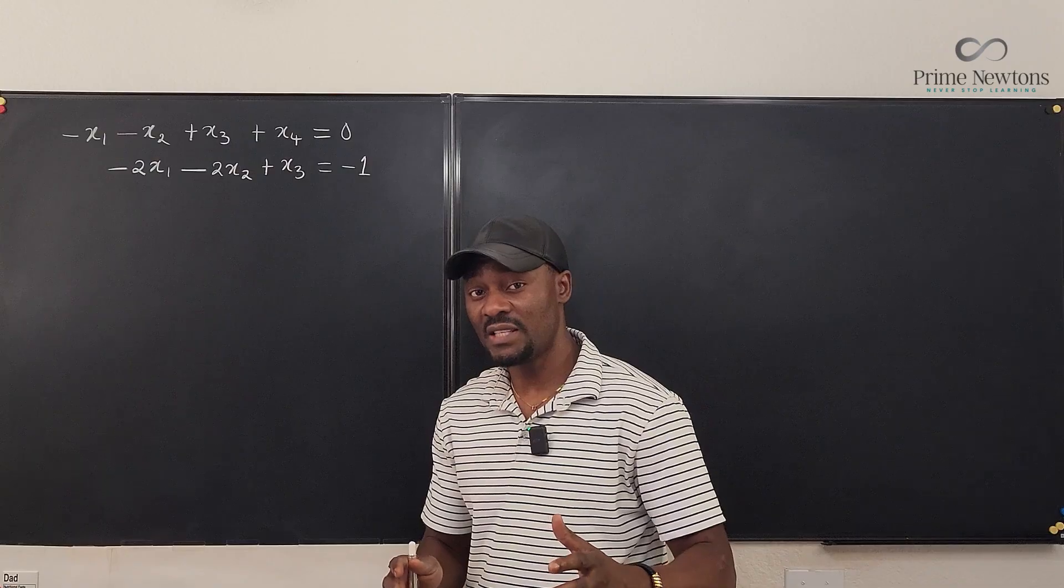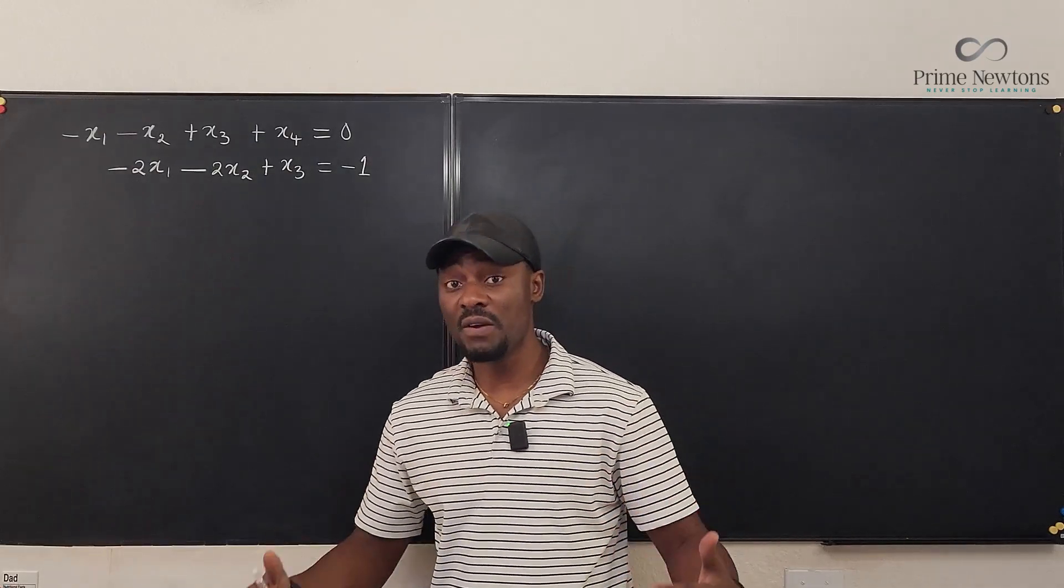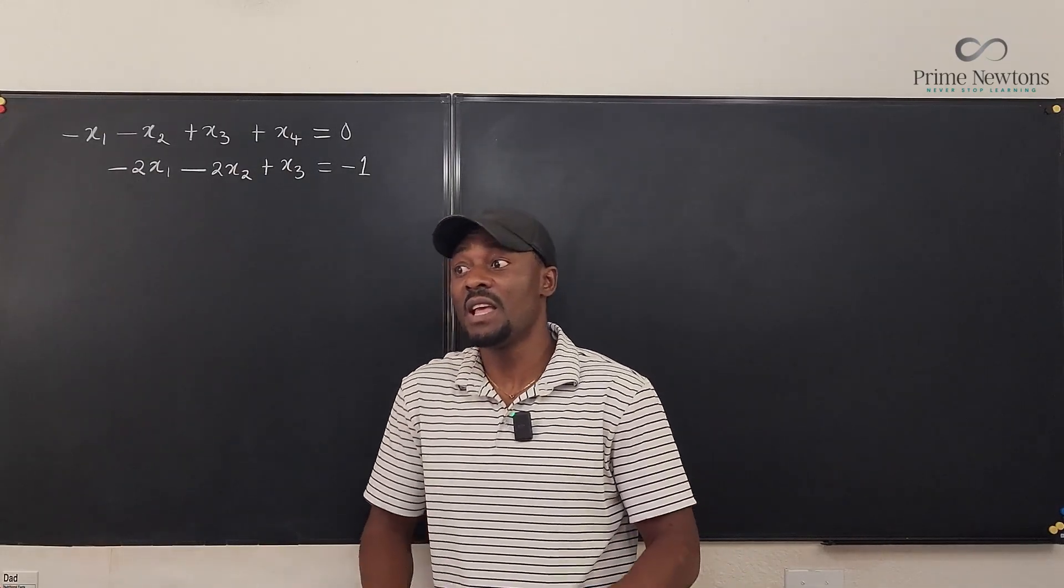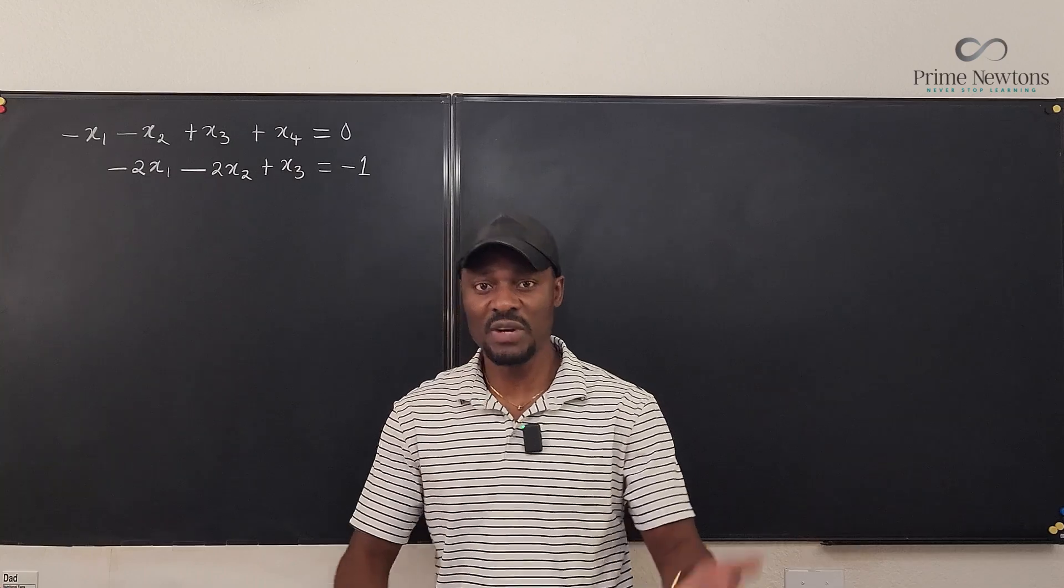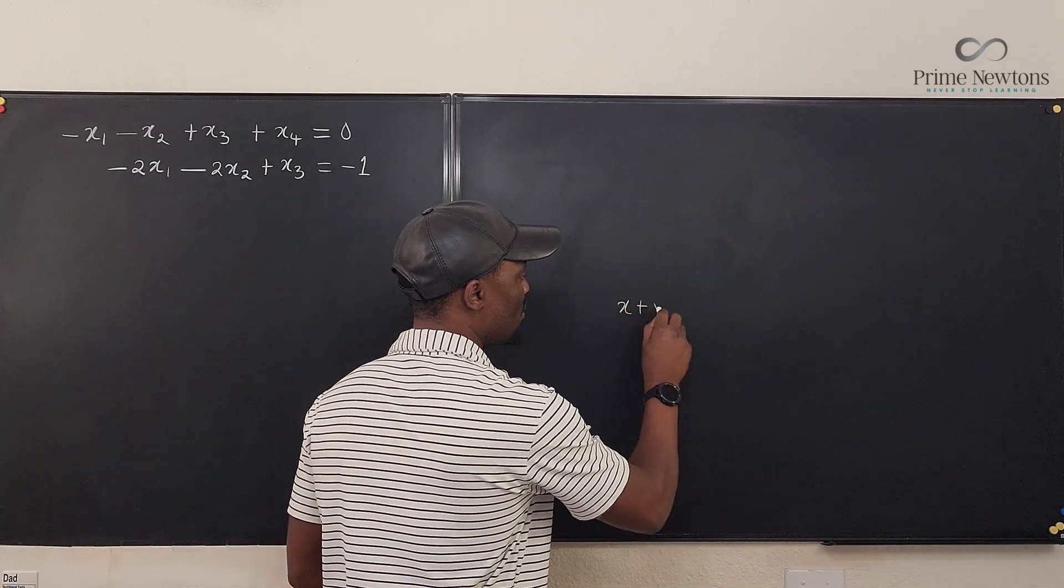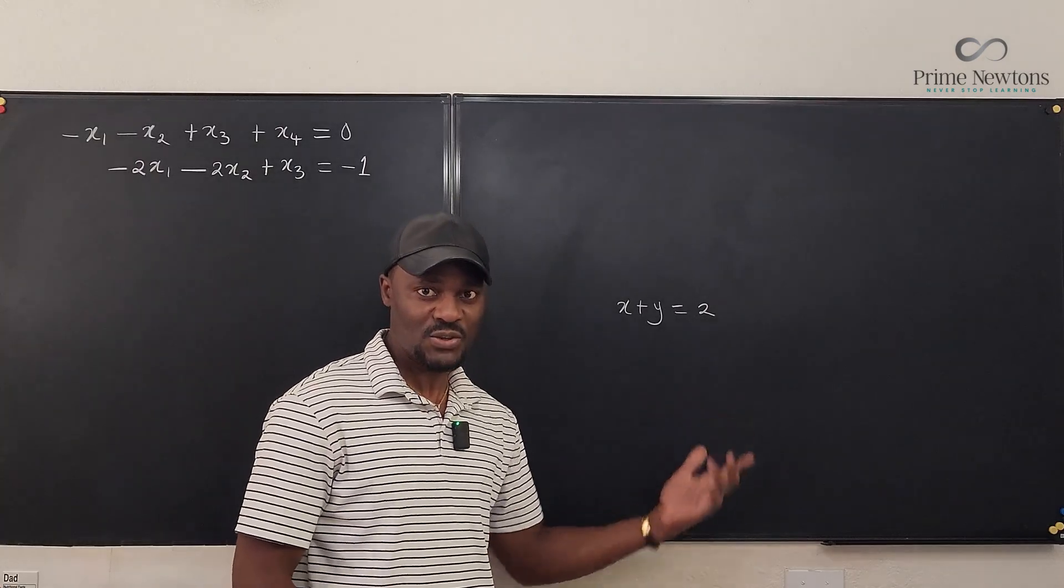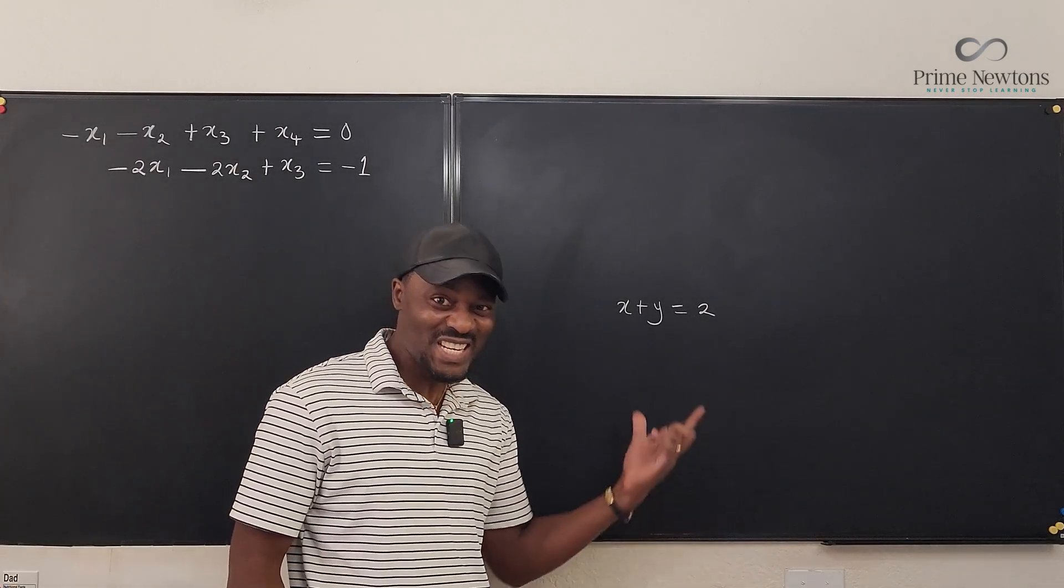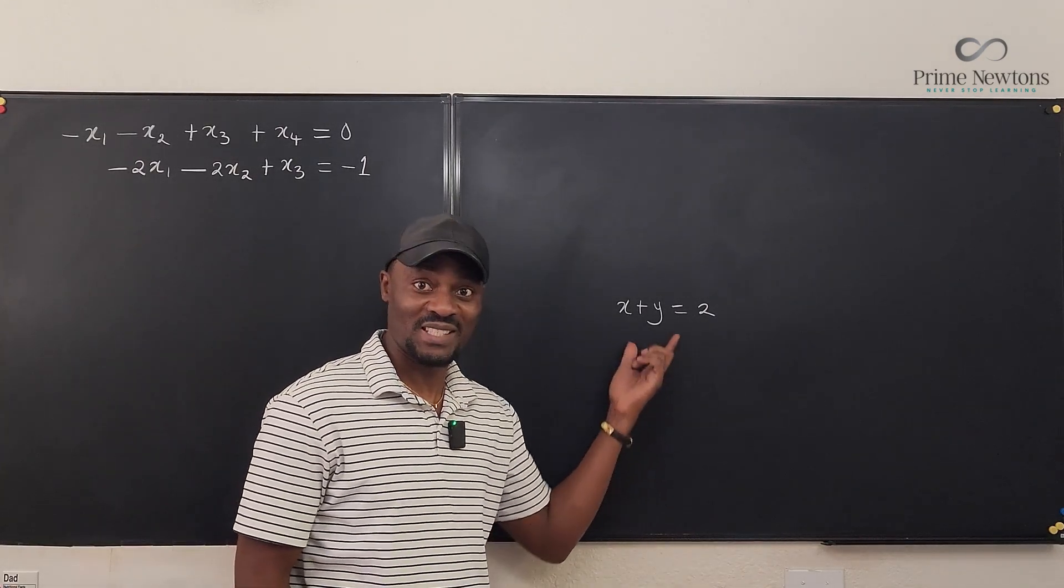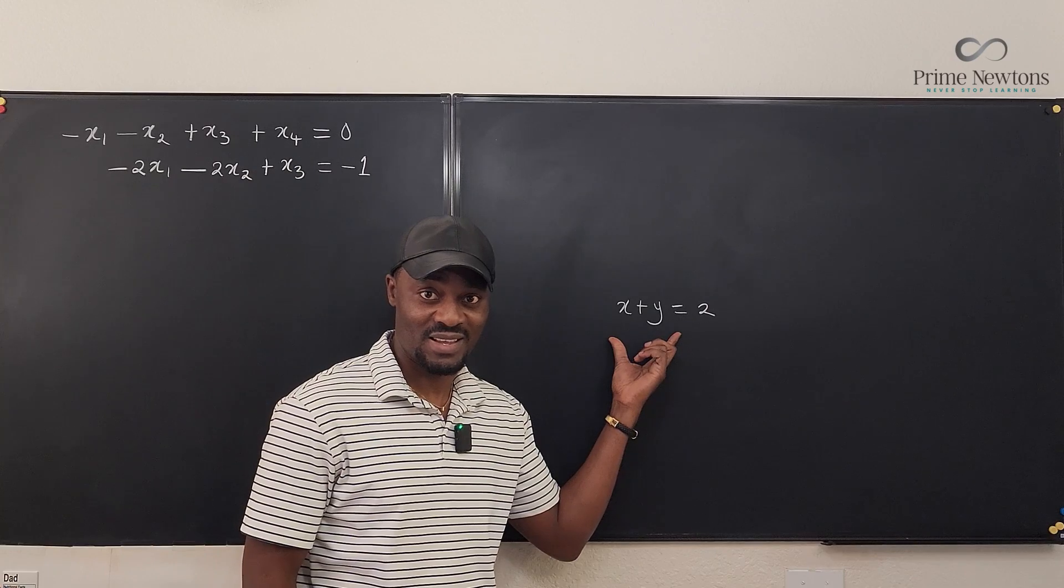So this is one of those cases where you're going to have what we call free variables because there will be something that you can make anything you want. For example, if I want you to solve this equation, x plus y is equal to two. And that's all I give you. Do you think you can solve this? You can't. You need another equation that is linearly independent from this.